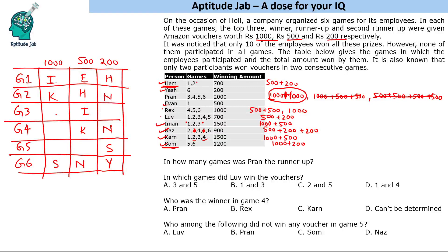Love wins 500 plus 200. Only one space remains for 200 and one for 500, so Love is placed accordingly. Rex cannot win 500 plus 500 now, so Rex must be winning 1000. Pran has to win 1000 plus 1000 in non-consecutive rounds, so Pran wins in the third and fifth rounds, and Rex wins in the fourth round. The table is now complete.